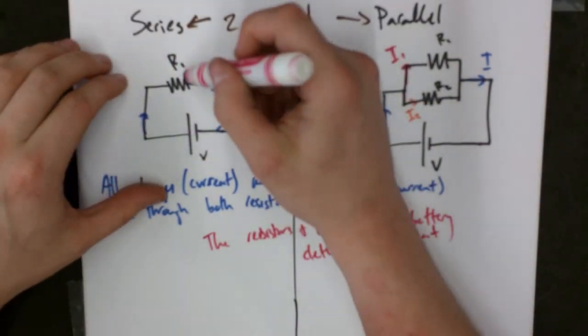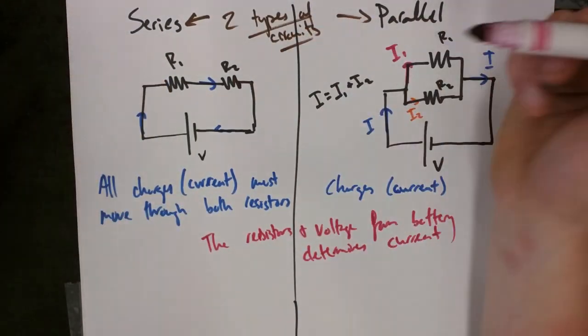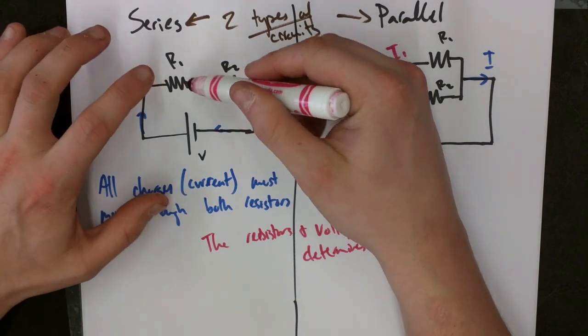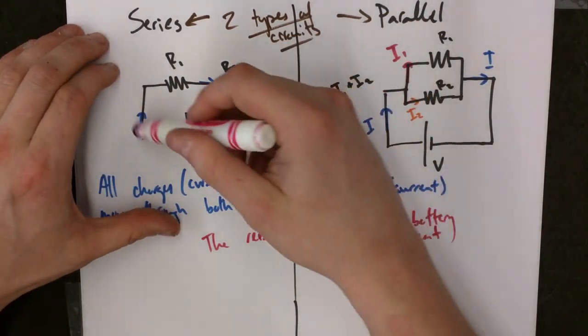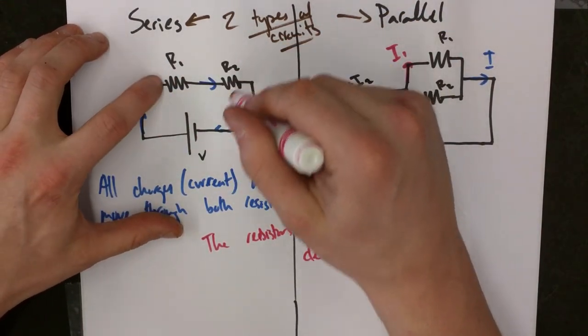Like in this circuit, if these two things were light bulbs, we know that both of them would have the same level of brightness because all of the current is going through both of them.